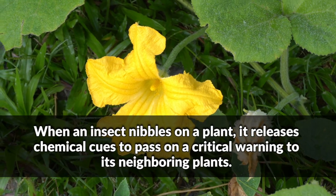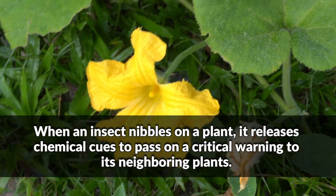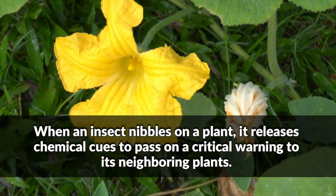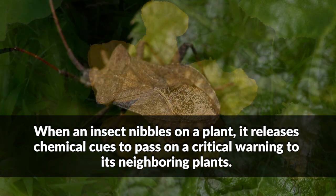When an insect nibbles on a plant, it releases chemical cues to pass on a critical warning to its neighboring plants.